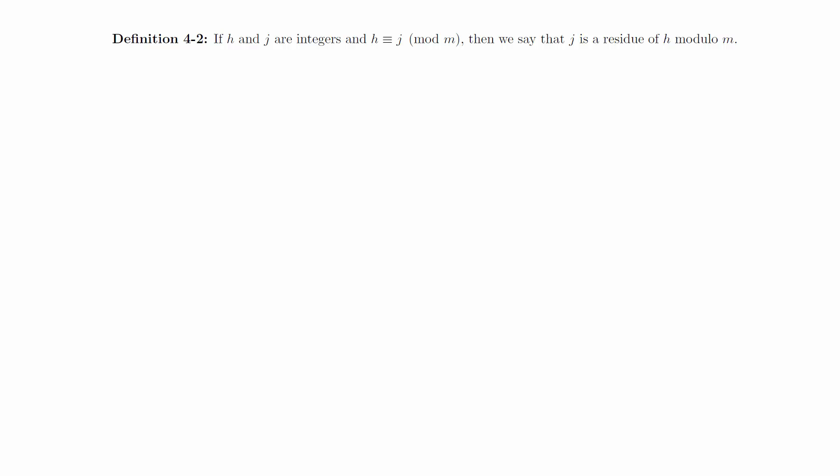If h and j are integers and h is congruent to j modulo m, then we say that j is a residue of h modulo m. The idea behind this definition is that we're going to relate numbers together by objects that we'll call residues. Notice that by the symmetric property of equivalents, we can also say that h is a residue of j modulo m.